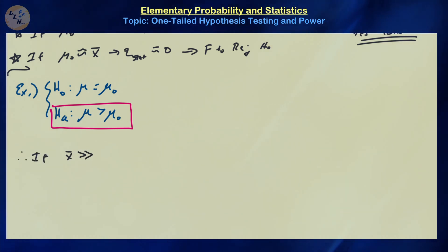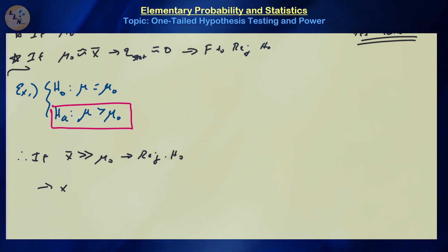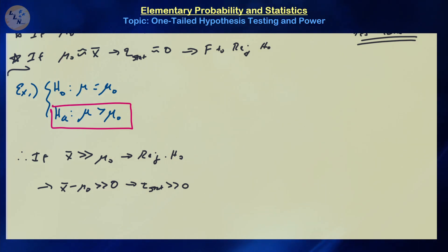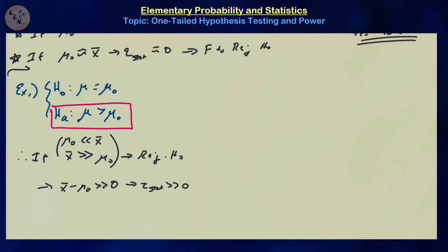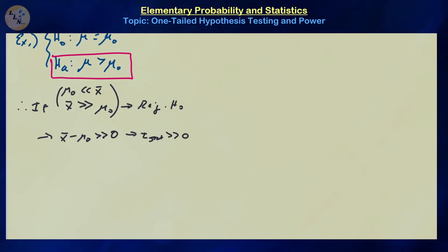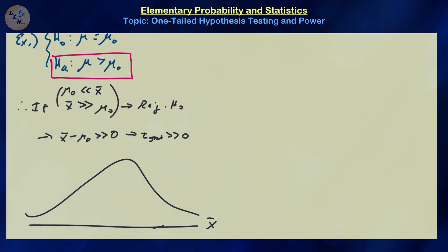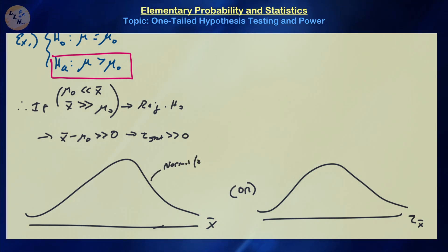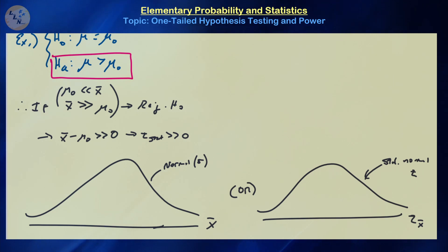If x-bar is significantly greater than mu zero, we're going to be rejecting the null hypothesis. If x-bar is significantly greater than mu zero, that means x-bar minus mu zero is significantly greater than zero, which means the test statistic is also going to be significantly greater than zero. Equivalently, if x-bar is significantly greater than mu zero, that means mu zero is significantly less than x-bar. Let's look at the pictorial representations, first in the x-bar domain, then in the z-score domain, assuming normal distribution with sigma known.